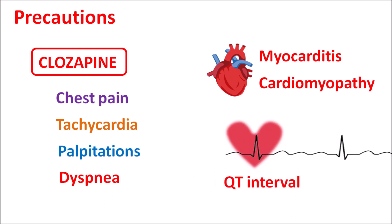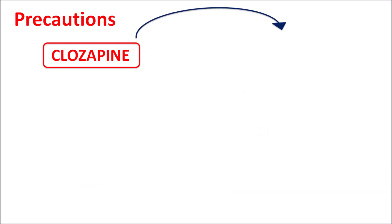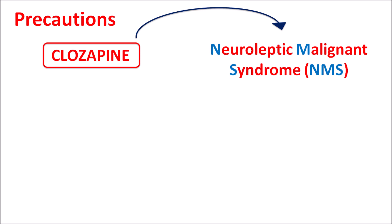Clozapine may increase the QT interval, which is especially important when co-administered with other drugs that also increase the QT interval. When the QTc interval is increased greater than 500 milliseconds, this drug should not be used, as it can lead to fatal cardiac arrhythmias.